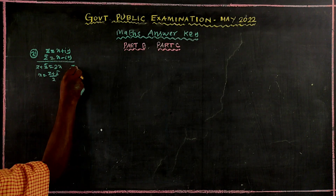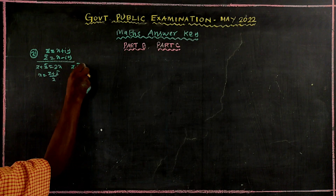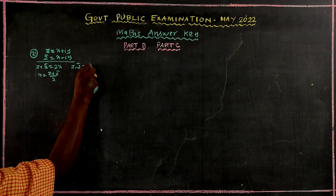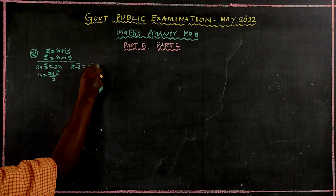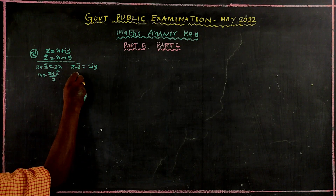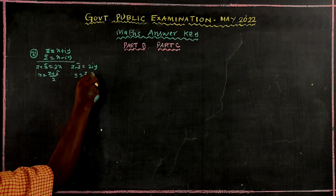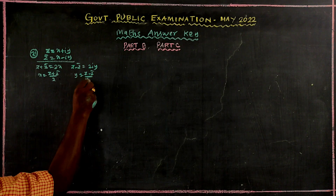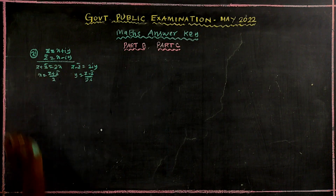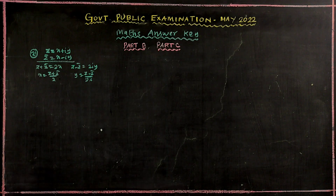If we subtract, z minus z-bar is equal to 2iy, so y is equal to z minus z-bar divided by 2i. This is the imaginary part. This is the second part.